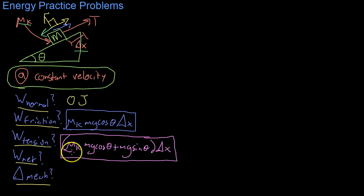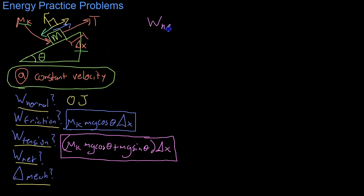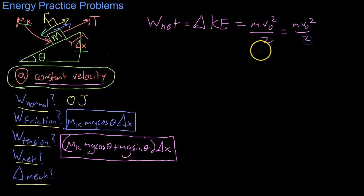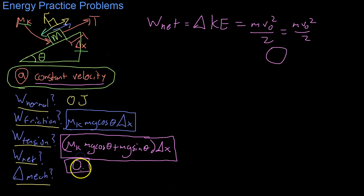Having solved for those, we look for the net work. We know that net work equals the change in kinetic energy. Because the block is traveling at constant velocity, the kinetic energy at start equals the kinetic energy at end — both are mv²/2 with the same v. Subtracting them gives a total change in kinetic energy of zero.